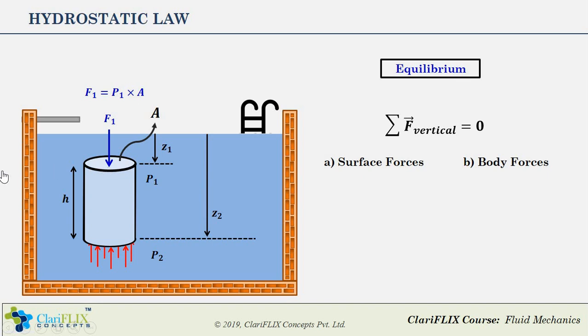Similarly, let F2 be the force on the bottom plane where pressure is P2 and the area is A. Therefore F2 equals P2 times A, which is acting in the upper direction. Now let us look at the body force. The only body force acting on this element is the gravity force, or the self-weight of the element.